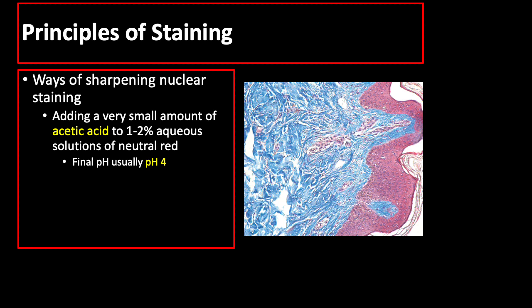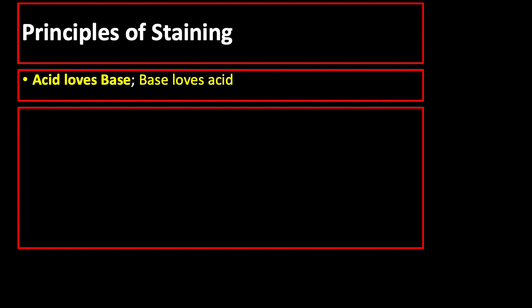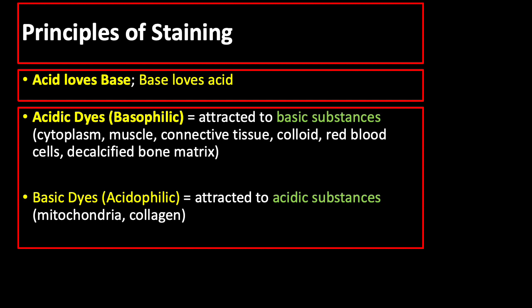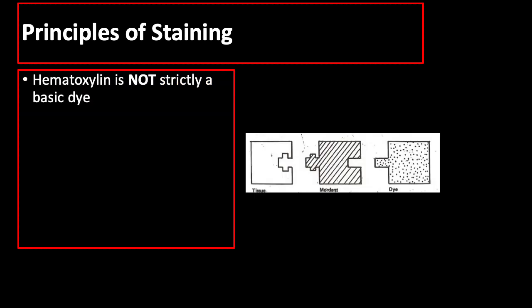Likewise, minor adjustments to make solutions more alkaline can be done with compounds such as sodium tetraborate or borax, or sodium carbonate added to methylene blue. In staining, an acid dye loves basic substances while a basic dye loves acidic substances. Therefore, acid dyes like eosin are eosinophilic, attracted to basic substances like cytoplasm, muscle, connective tissue, red blood cells, and decalcified bone matrix, while basic dyes like hematoxylin are attracted to acidic substances. Hematoxylin is strictly not a basic dye but is used with a mordant that makes it act as one.